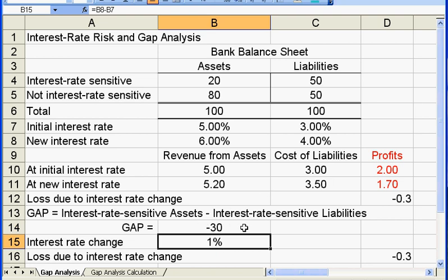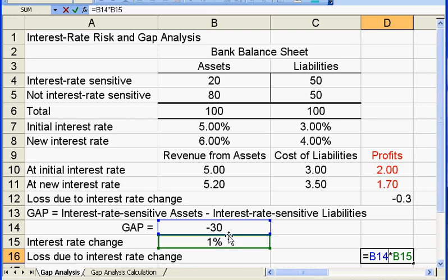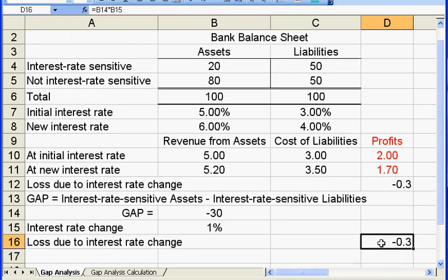The gap should always be negative because usually banks have much less interest rate sensitive assets than interest rate sensitive liabilities. And then I use this gap times the change in interest rate, that is the 1% here. So I times these two together, I can get the change in the profit.